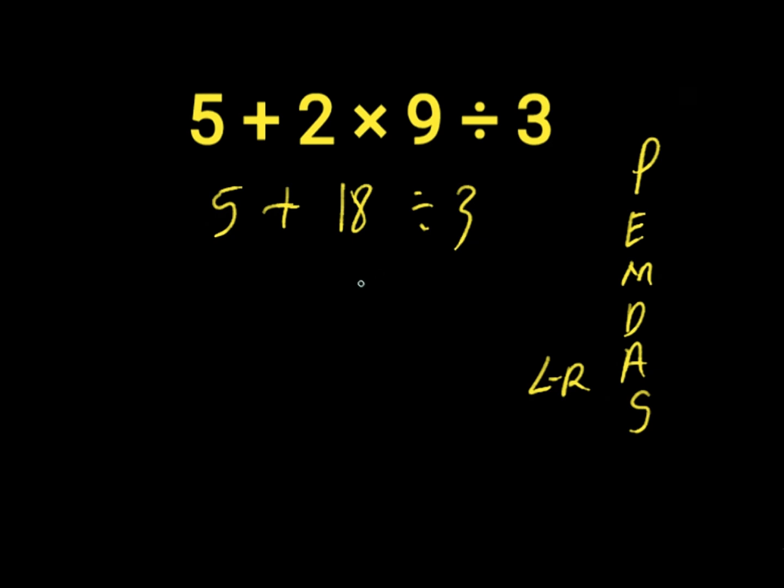18 divided by 3 will give us 6. Then we have 5 plus 6. 5 plus 6 is 11. 11 is the right answer to this expression.